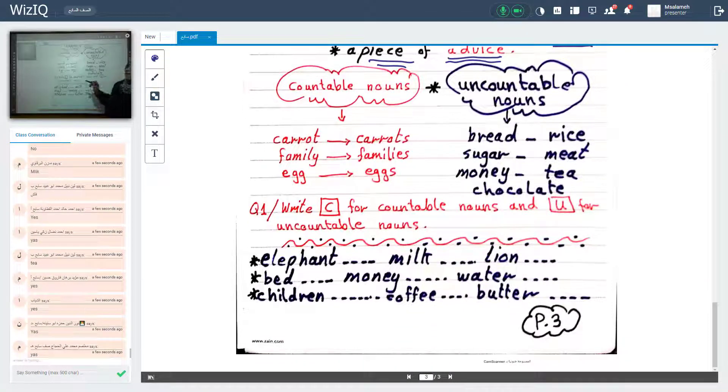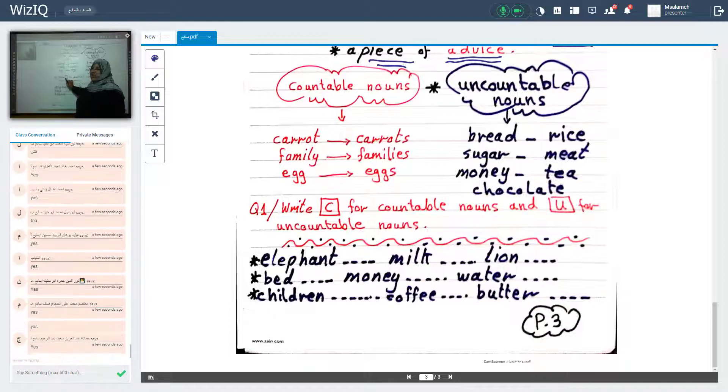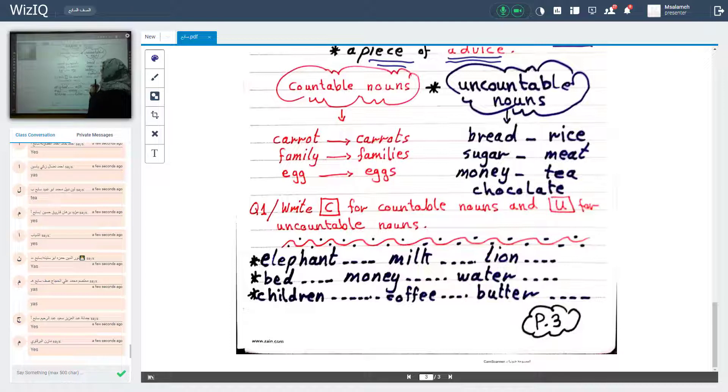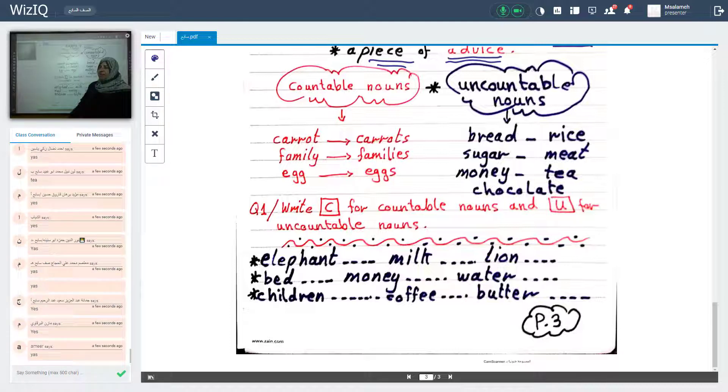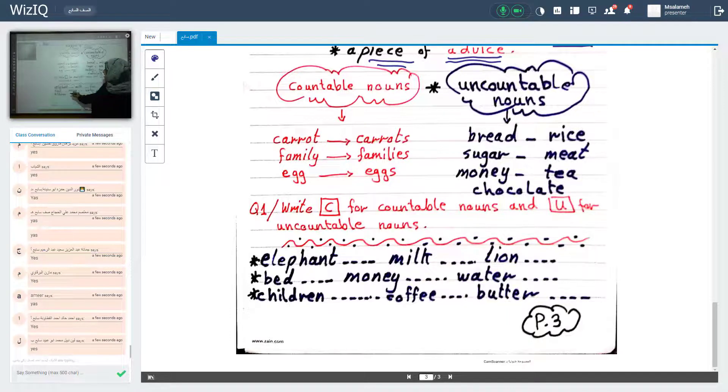Look at this exercise. Write C. C, it's abbreviation for countable. For countable nouns. And U. Uncountable for uncountable nouns. Look at here. At the first word. Are you ready? Let's answer this exercise together. Are you ready, my student? Yalla, follow me. Who would like to answer?